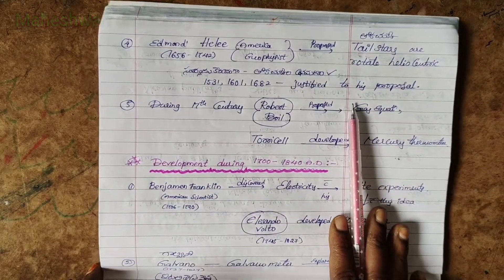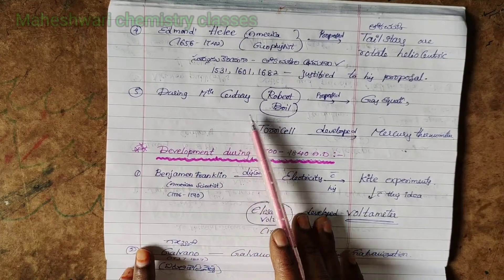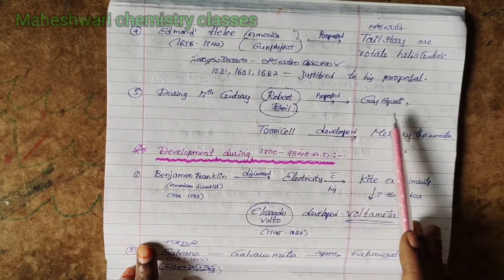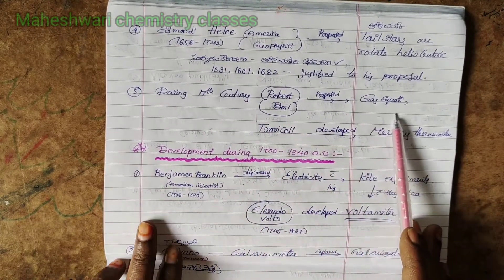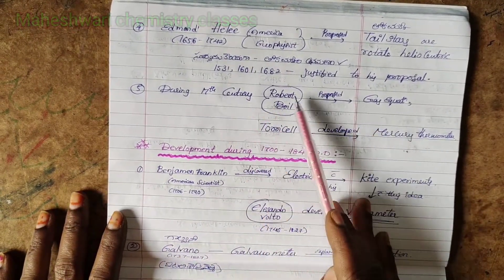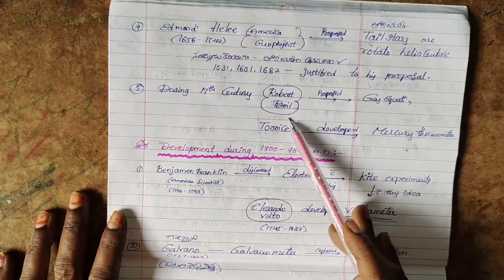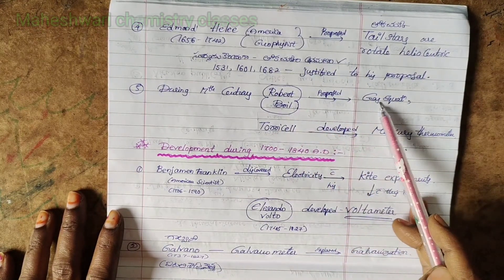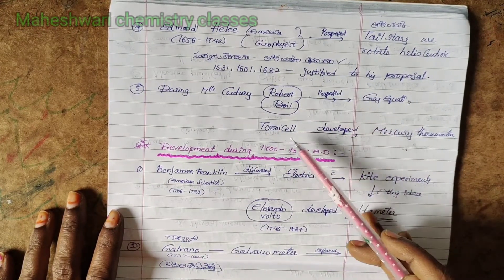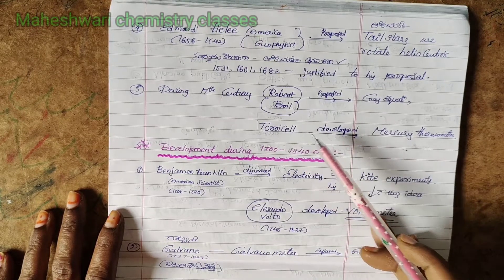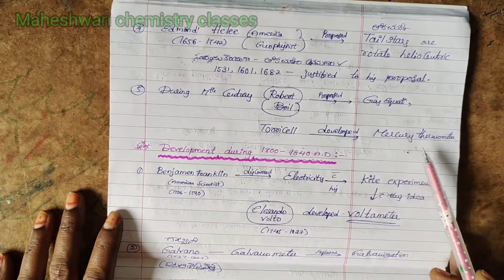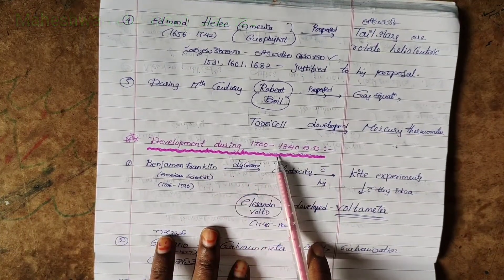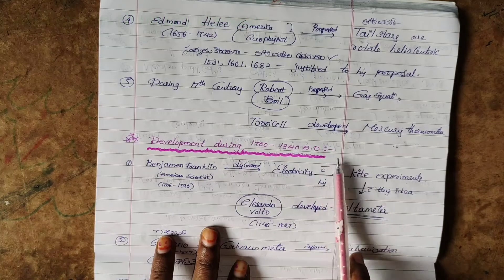During the 17th century, Robert Boyle proposed the gas equation. Next, Torricelli developed a thermometer. Development during 1700 to 1840 AD.